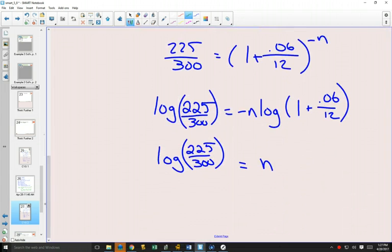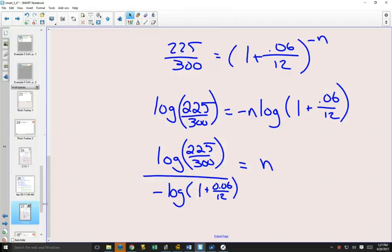So then to get N by itself, what are all the things that we have to divide by? We have to divide by the negative and the log of 1 plus 0.06 divided by 12. Plug this whole thing into our calculator.